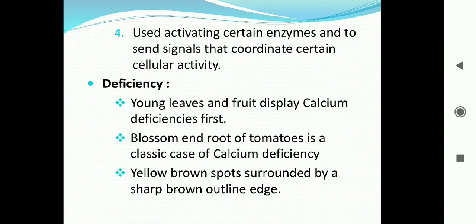Calcium is used for activating certain enzymes and sending signals that coordinate certain cellular activities. Several enzymes are necessary for various metabolic activities of the plant, and calcium plays a very important role in activating enzymes required for metabolic processes including photosynthesis, respiration, transpiration, and the electron transport chain.